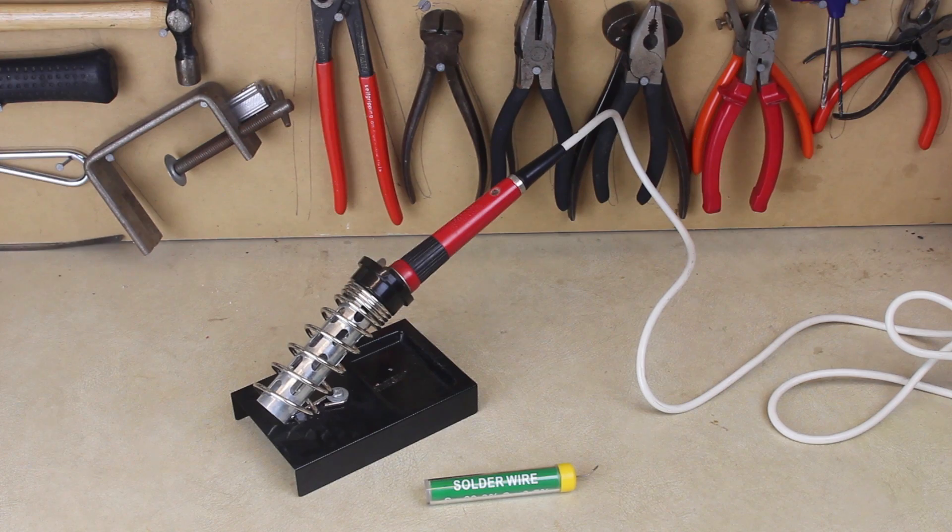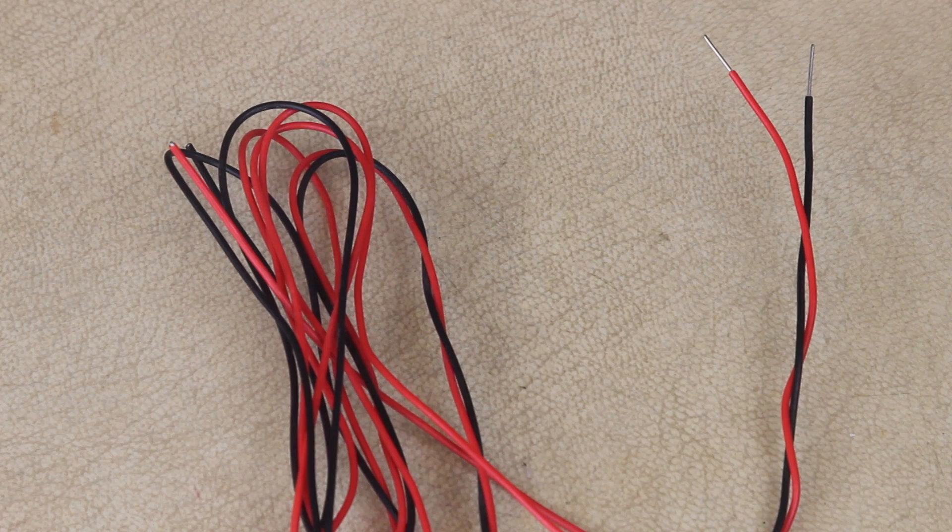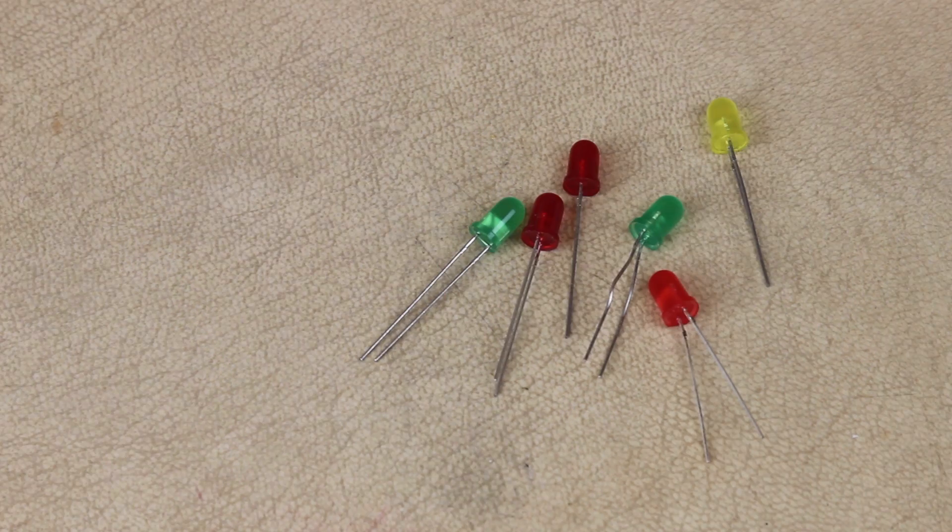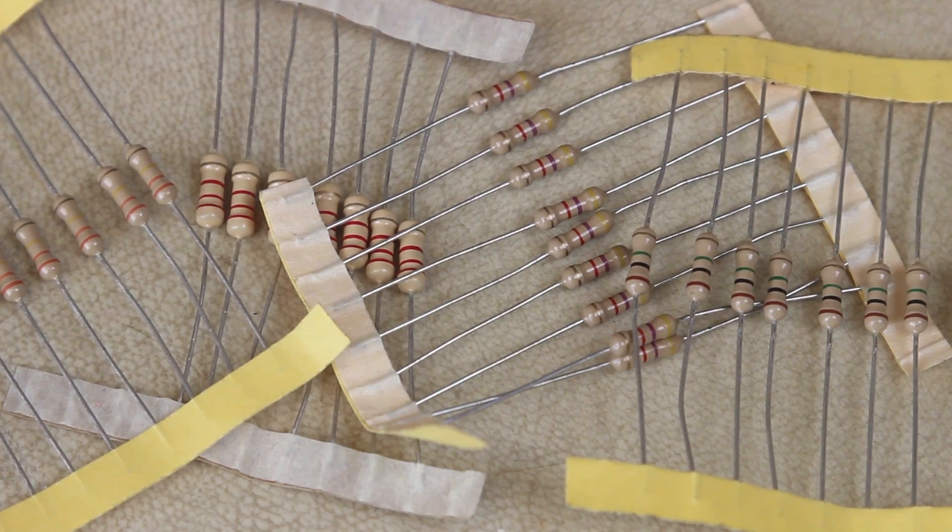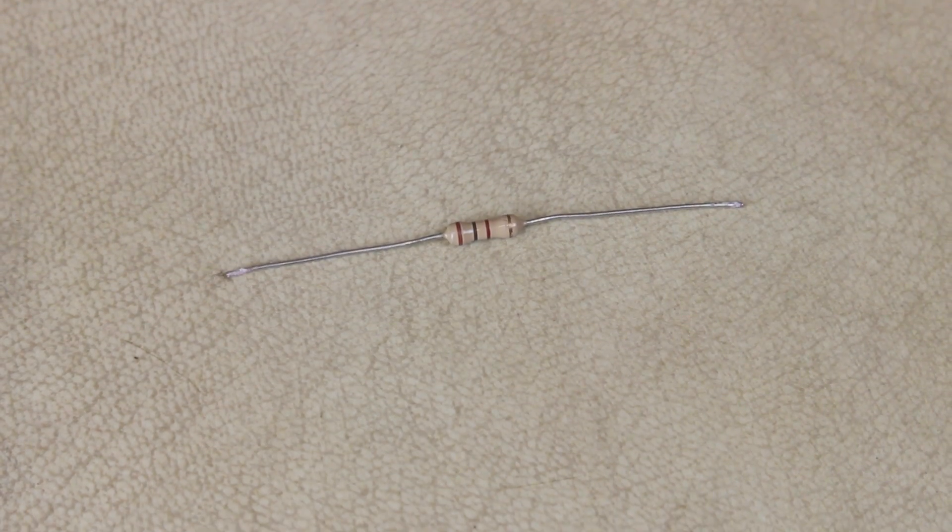So you're going to need a soldering iron and solder, a male XLR plug, a small length of wire, an LED of whatever color you want, and a small value resistor. I'm using 110 ohms.